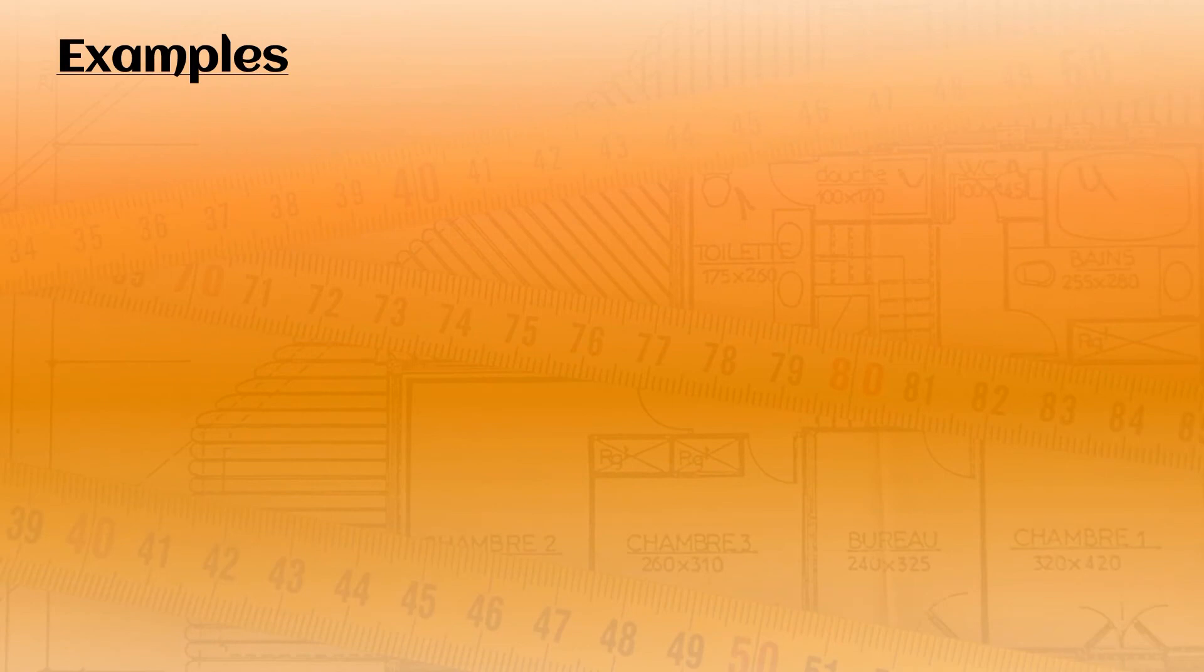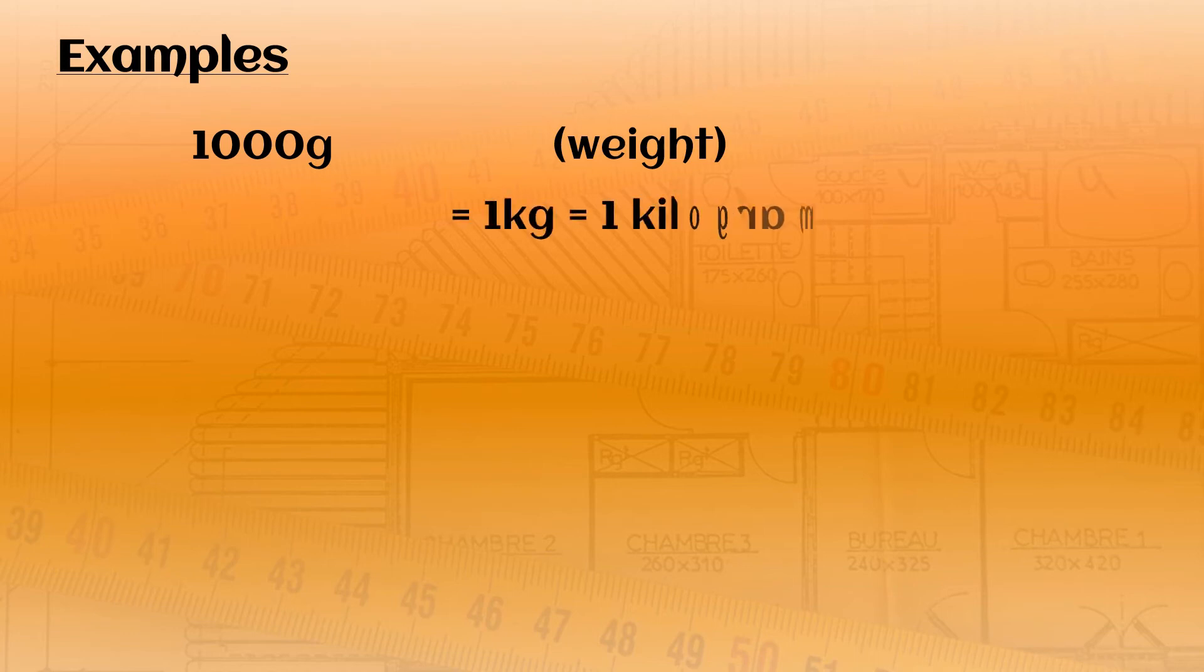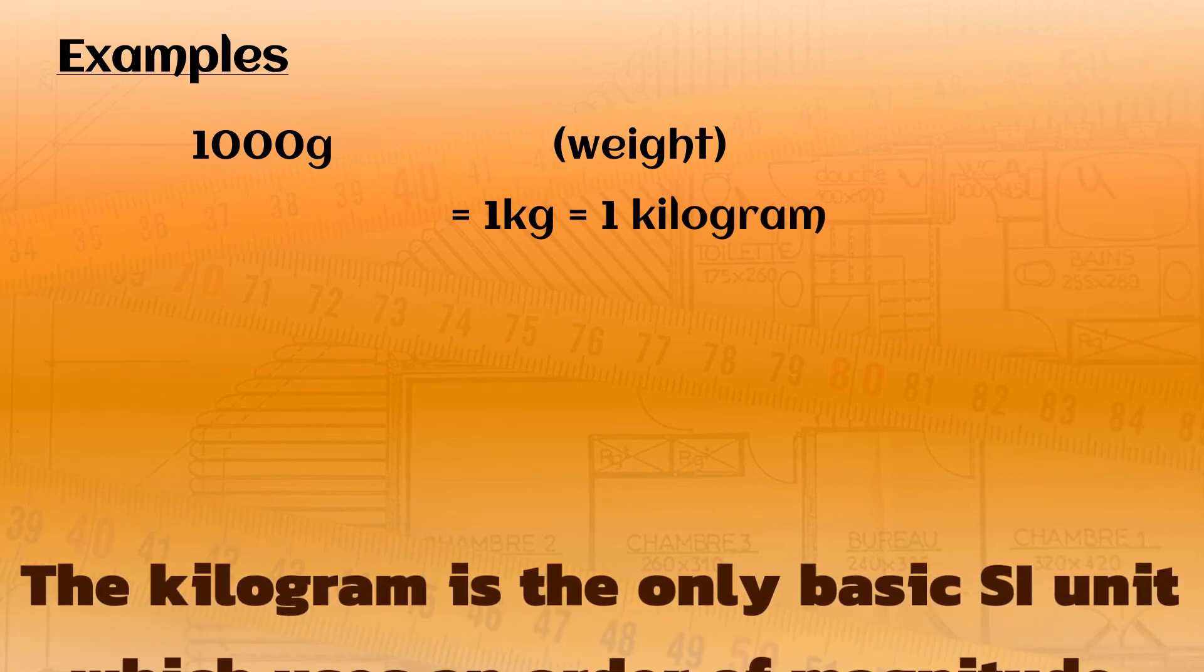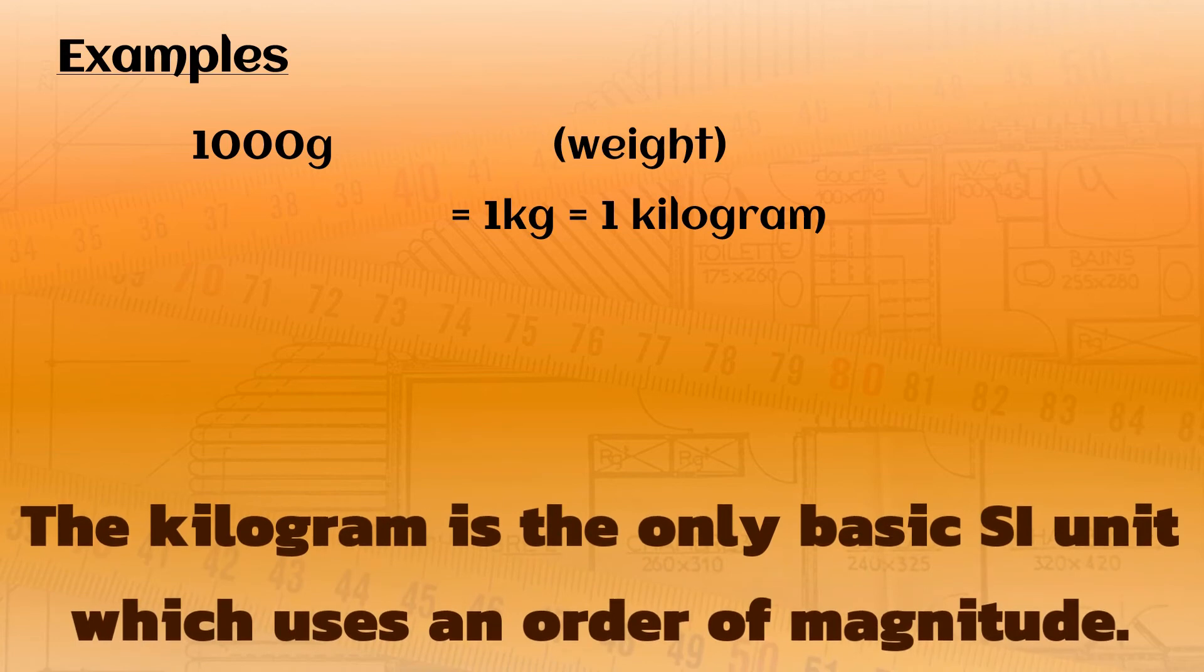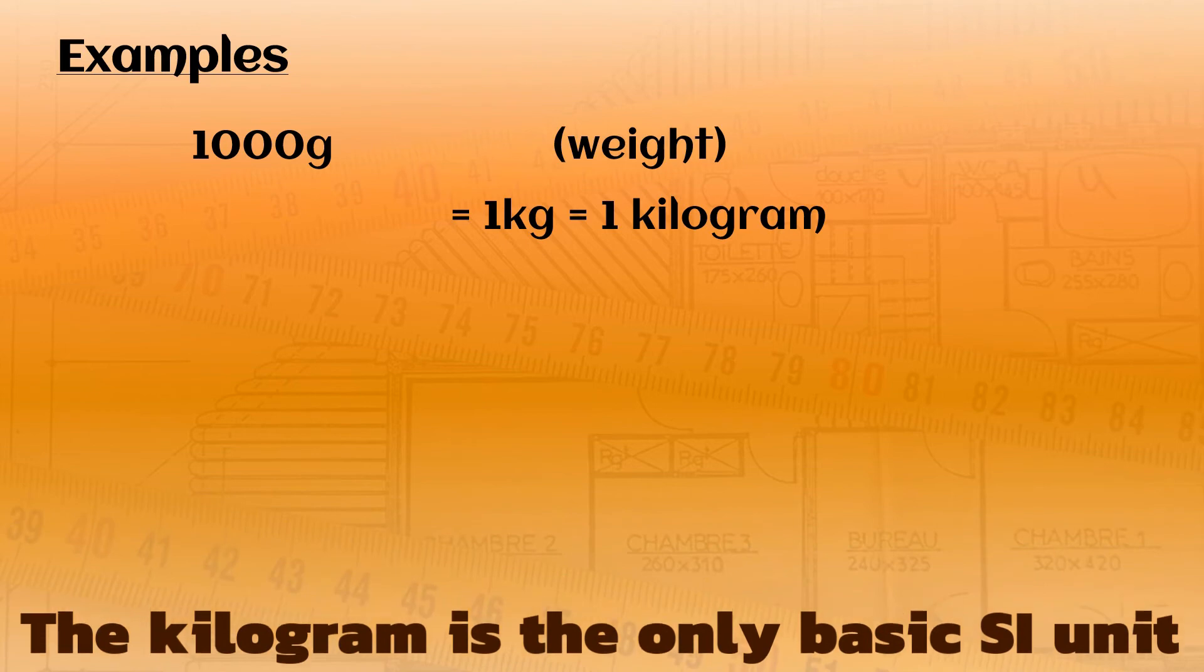Let's just look at a couple of quick examples. If you have a thousand grams in weight, what order of magnitude prefix can you use? Well, the answer that you probably know is one kilogram. Use kilo. And the kilogram, as we saw above, is a basic SI unit. And it's the only one which actually uses an order of magnitude.